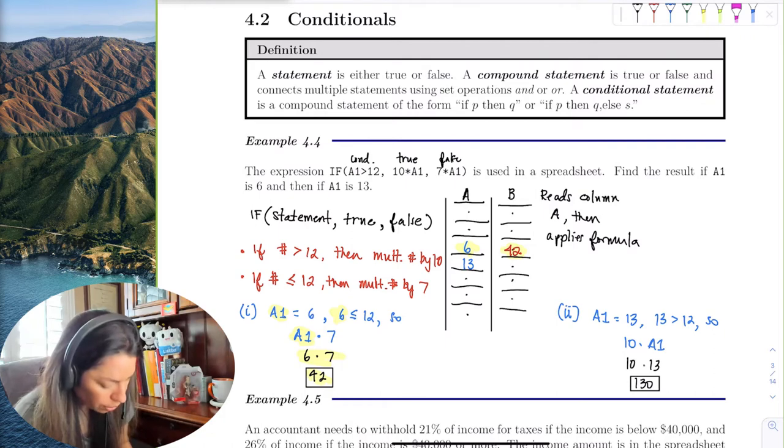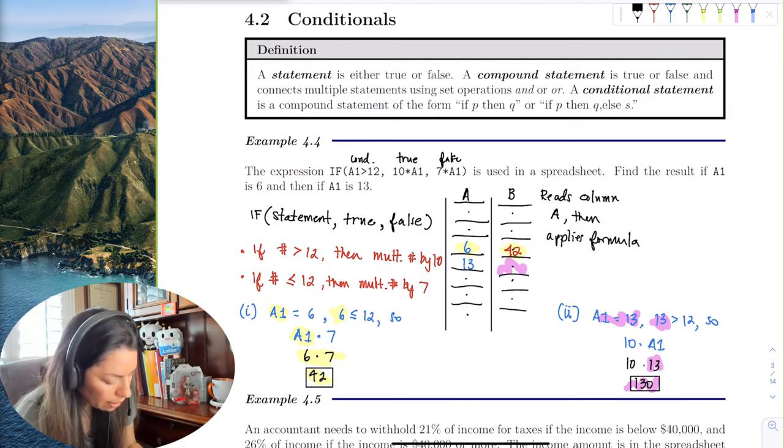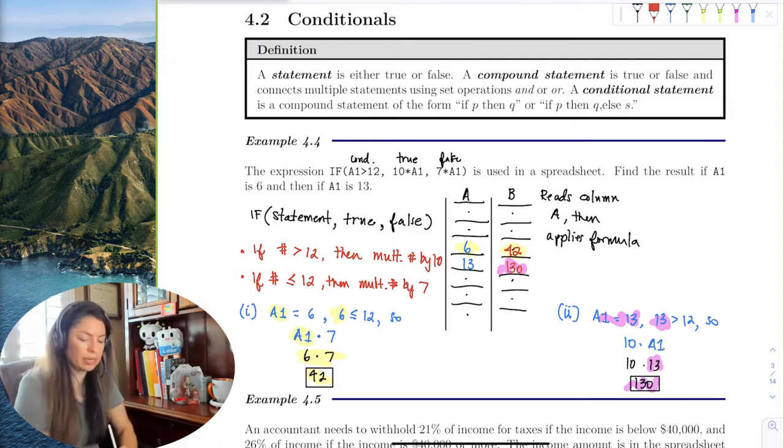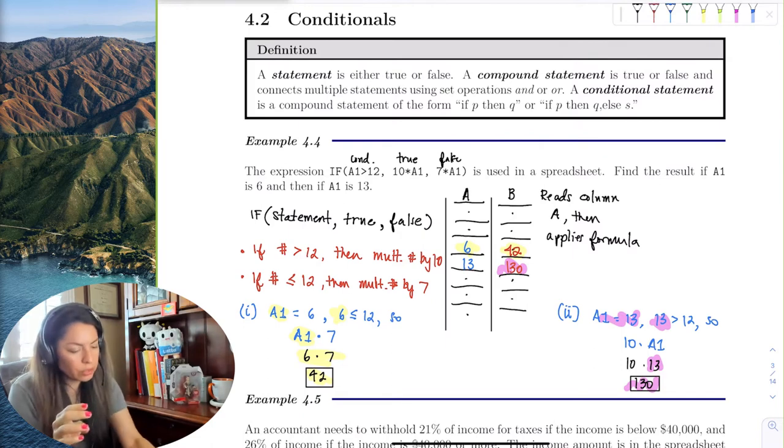So here if A1 is 13, then that column B will have 130, spit out 130 in it.